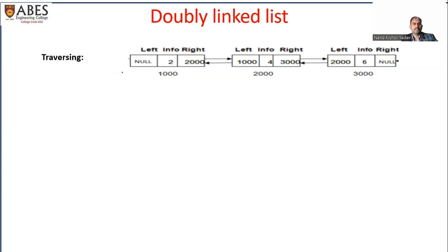Forward traversal is done using the right pointer, and backward traversal is done using the left pointer. Let's assume a doubly linked list of three nodes is given. We have a start variable which holds the address of the start node. The right part of the last node contains null, and the left part of the starting node also contains null, because in a doubly linked list both ends are null.